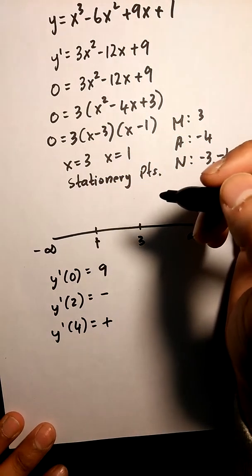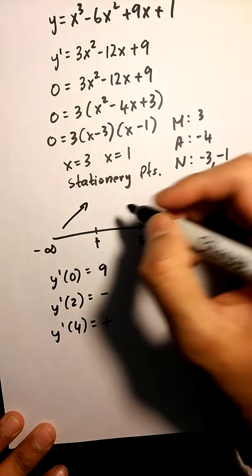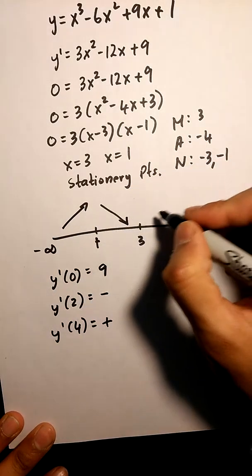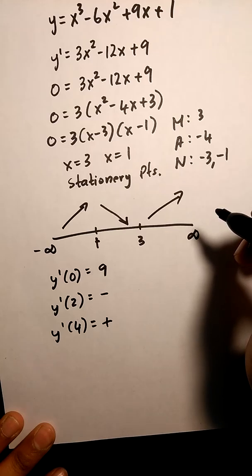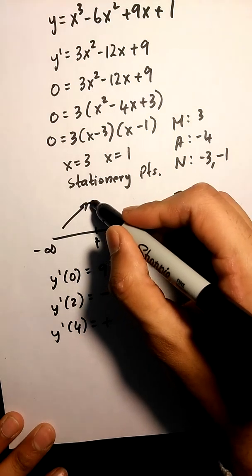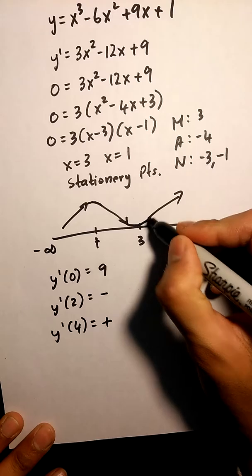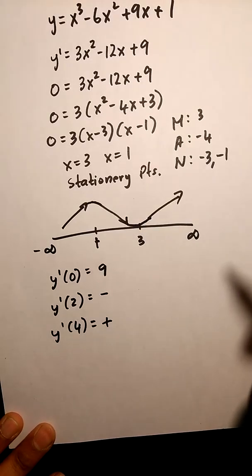So we know that our function is increasing, then decreasing, then increasing again. So in this function here we have a maximum and we have a minimum that we will have to find out later as well.